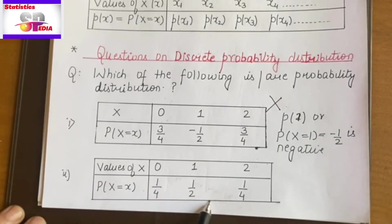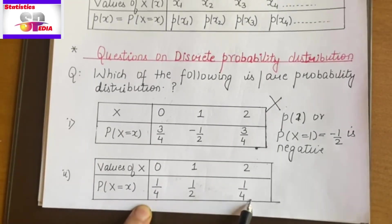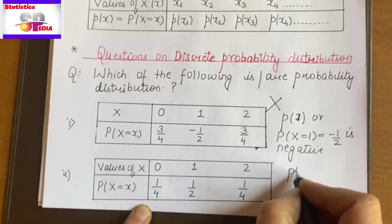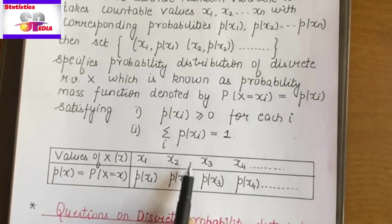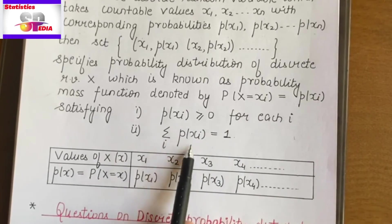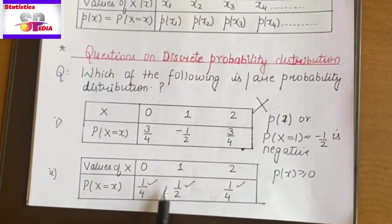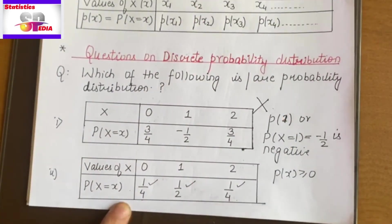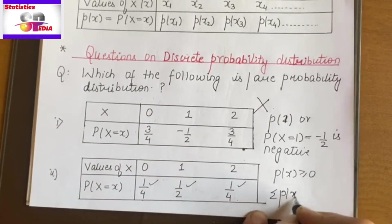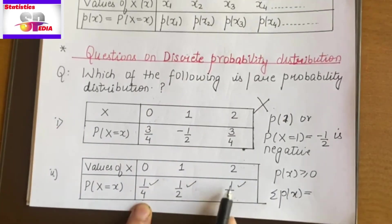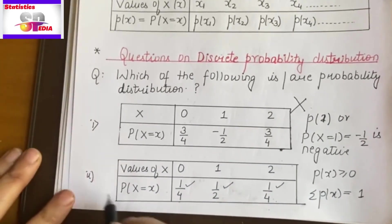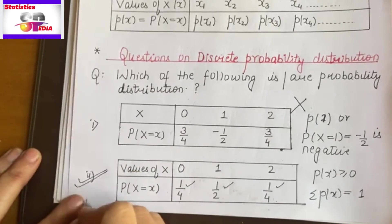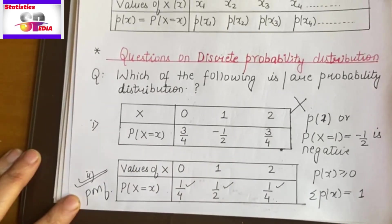Moving to the second question. Are all probabilities greater than zero — i.e., non-negative? Yes — this value is positive, this is also positive, this is also positive. So the first condition is satisfied. Now the second condition: their sum should equal 1. Let's check — summation of p(x): yes, it is 1. Half plus half is one. So both conditions are satisfied — this is a probability mass function.